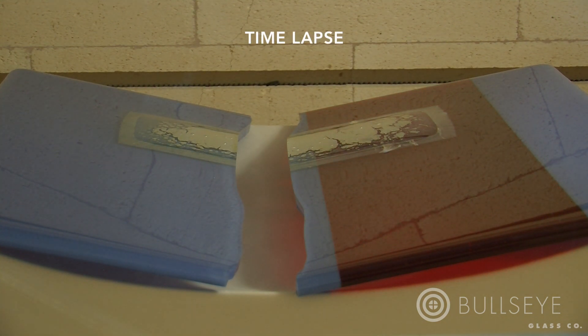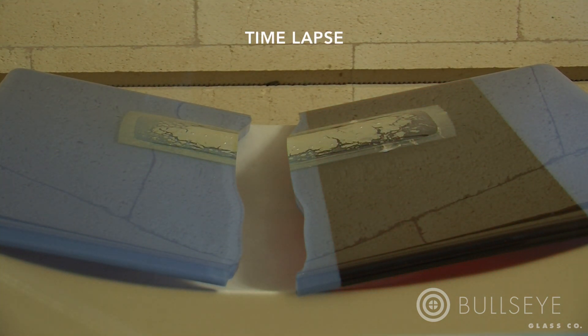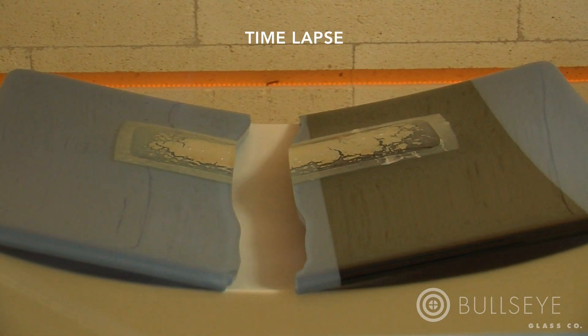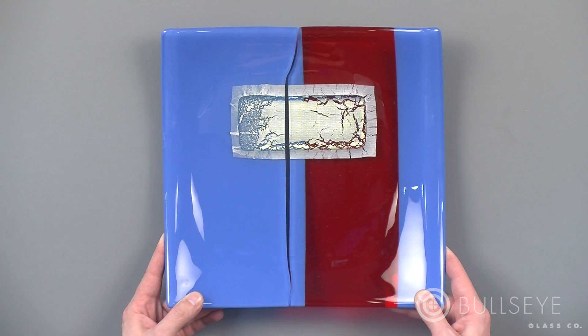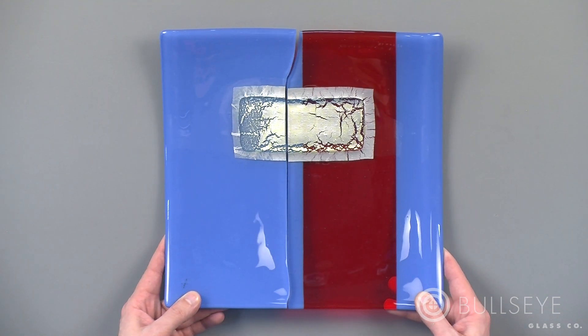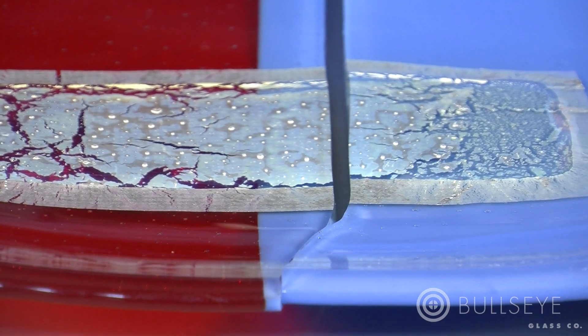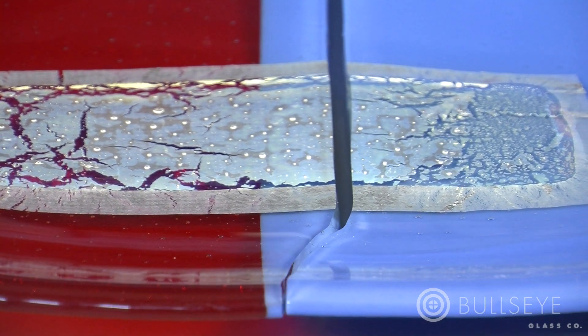In the case of low process temperatures such as slumping, the pieces of the broken plate will slump separately. These pieces won't fit back together after the firing because they slumped on different areas of the mold, and the edges won't soften because there isn't enough heat involved.